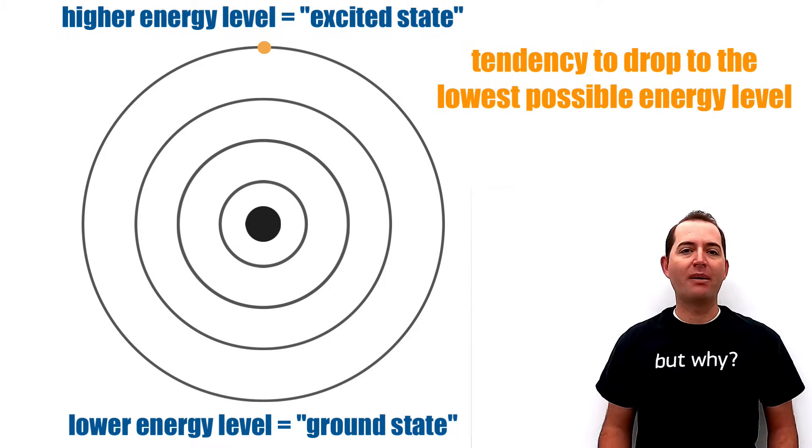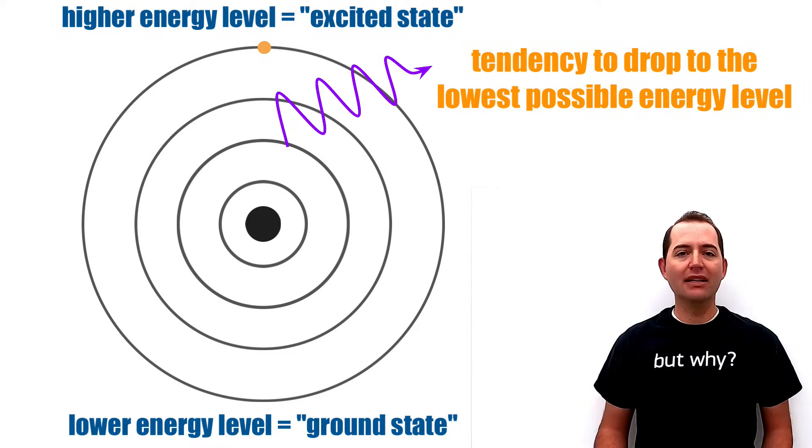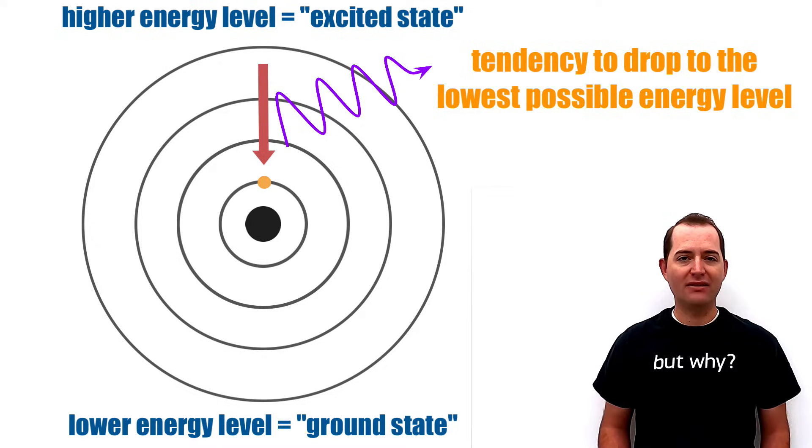Electrons have a tendency to drop from a higher energy level to a lower energy level, so once they are in an excited state, they will release their extra energy and drop to a ground state.